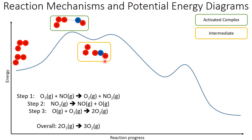This is our first intermediate point. So the peaks on a potential energy diagram are transition states with activated complexes, and the valleys are intermediates.